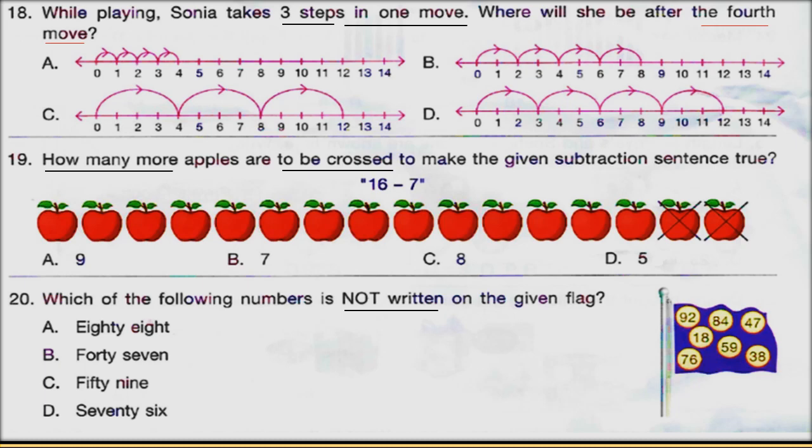Question number 20: which of the following numbers is not written on the given flag? Some numbers are given in options A, B, C and D. Look at the flag and identify which number is not written on it.